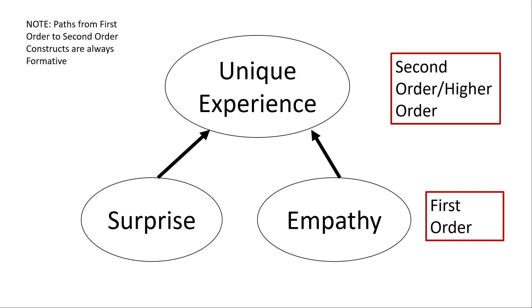The overarching concept made up of multiple constructs is called the second-order or higher-order construct. You'll notice that the paths go from the first order to the second order — that is always the most appropriate way to handle higher-order constructs. I have a separate video on formative and reflective indicators if you want to know why, but you're always going to use formative indicators from the first order to the second order when making a higher-order model.